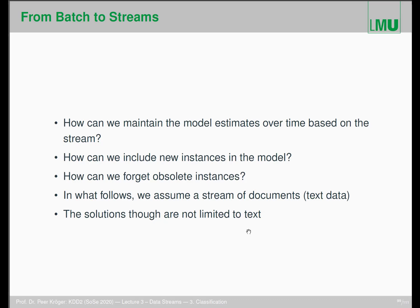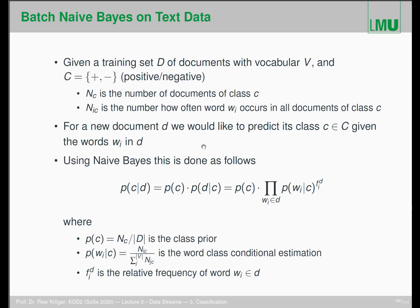We'll answer those questions assuming a stream of documents, but the solution is not limited to text — it can be generalized very easily. Here is the application: given a training set of documents with some vocabulary, the words are the features, and the class label is either positive or negative (e.g., positive or negative sentiment). N_c is the number of documents, and y_c is how often a given word (feature) occurs in all documents of class c. For a new document, we predict its class given the words in that document.